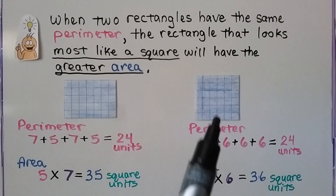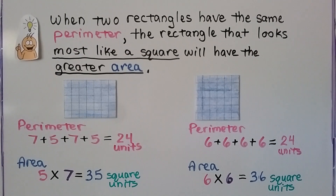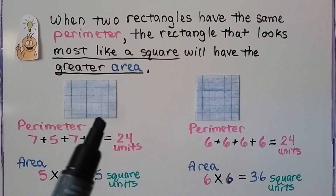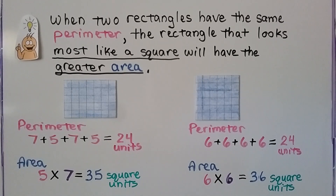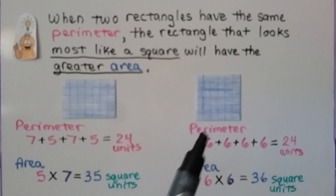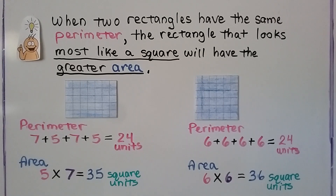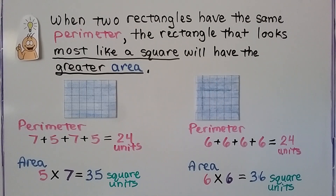I can just look at two shapes and say the one closer to a square will have greater area. Here the perimeter is 7 plus 5 plus 7 plus 5, that's 24 units, and its area is 5 times 7 equals 35 square units. The other shape has a perimeter of 6 plus 6 plus 6 plus 6, also 24 units — it is a square with all 4 sides equal to 6. Its area is 6 times 6 equals 36 square units, one more than the rectangle.